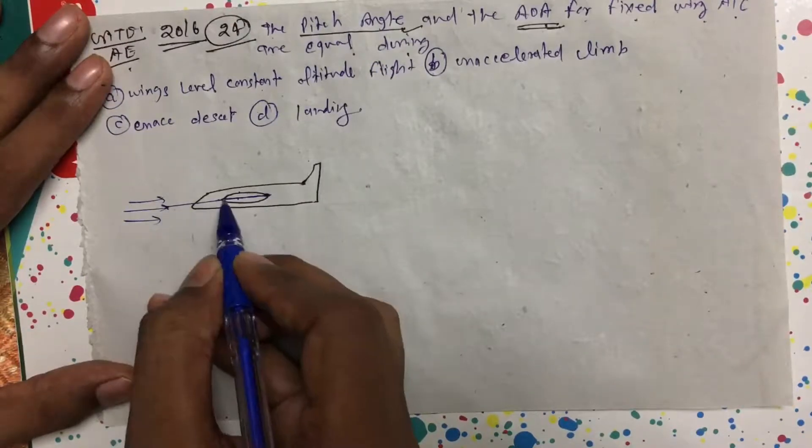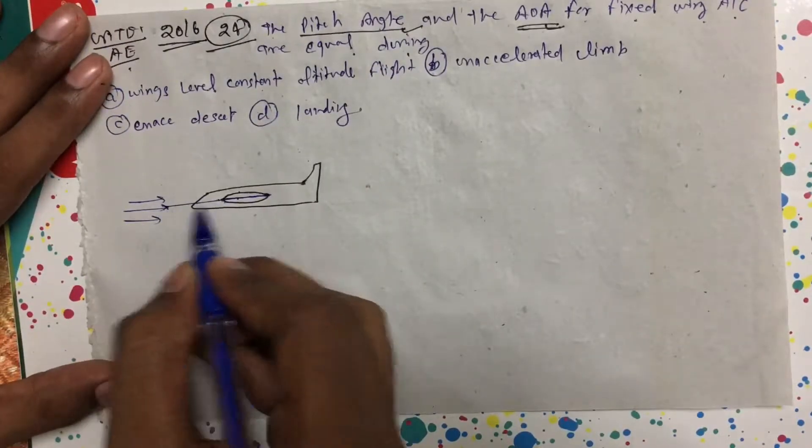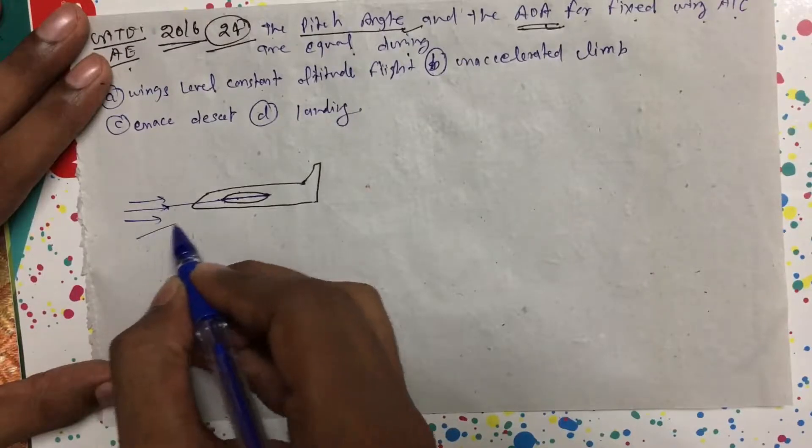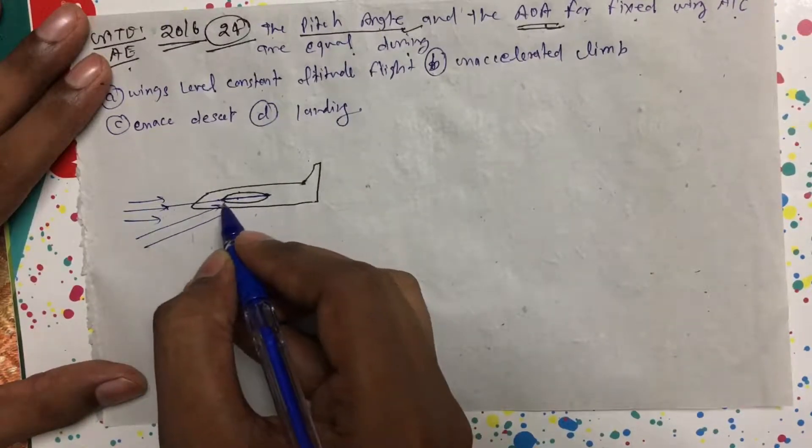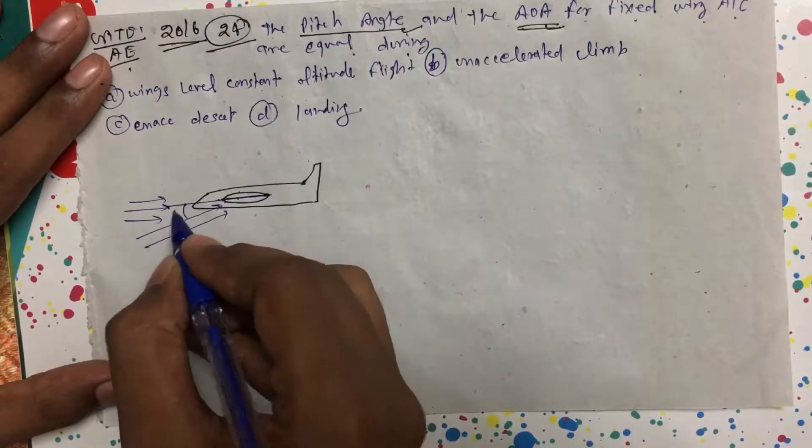Then you see, chord line and air - if I am saying there is no angle in chord line and air, and if air is coming like this, the angle with chord line and the air is alpha. That is called angle of attack.